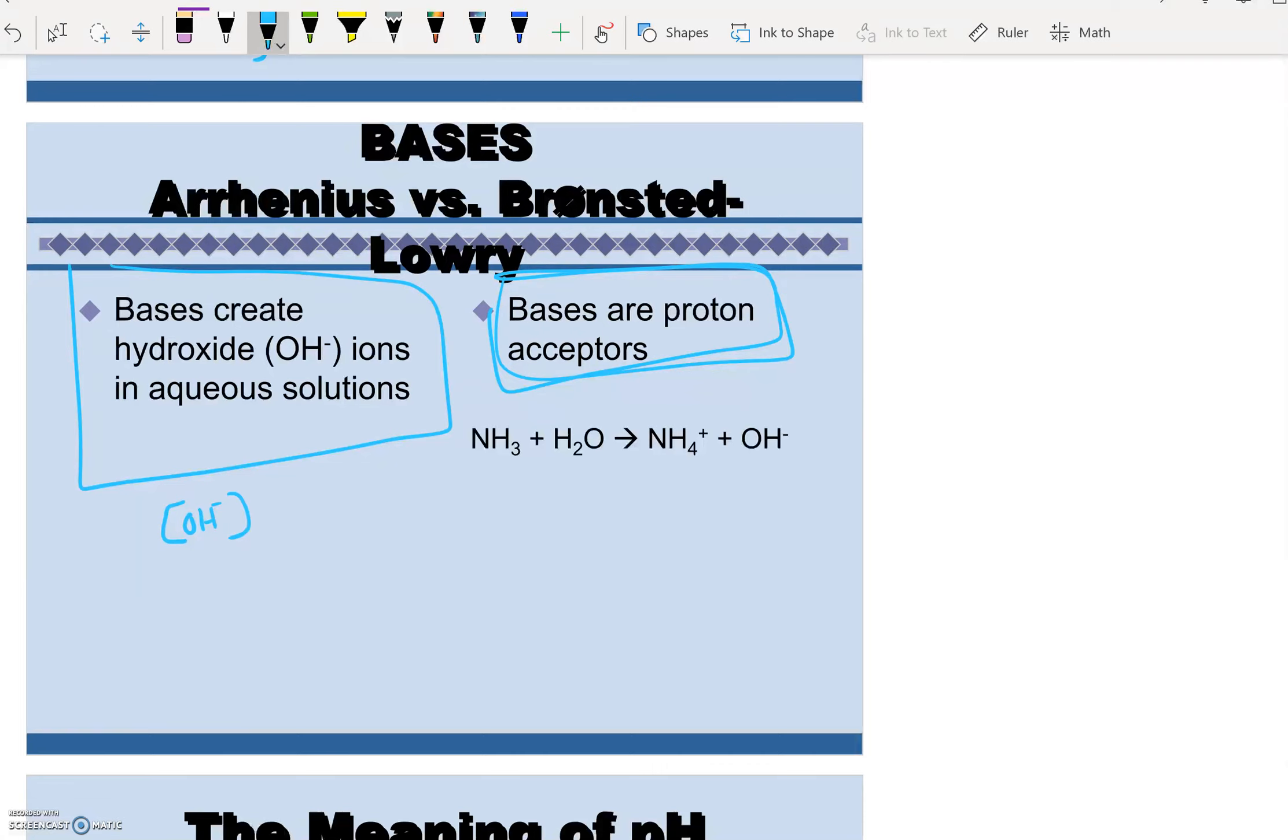Like Arrhenius's definitions work great with what's called strong acids and strong bases. But ultimately, there aren't very many strong acids or strong bases. And Bronsted-Lowry's definition is more widely used.